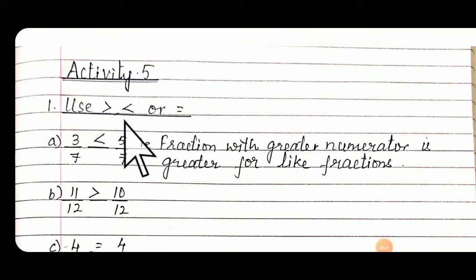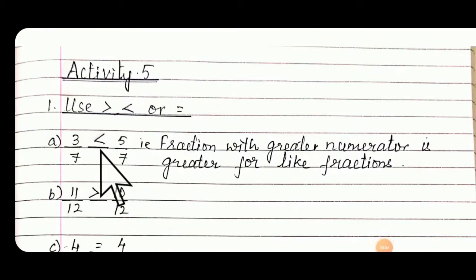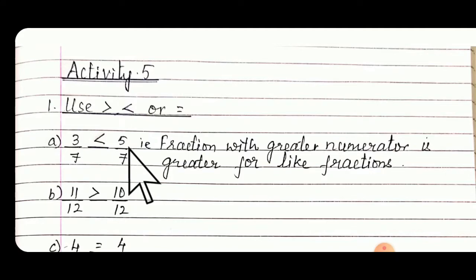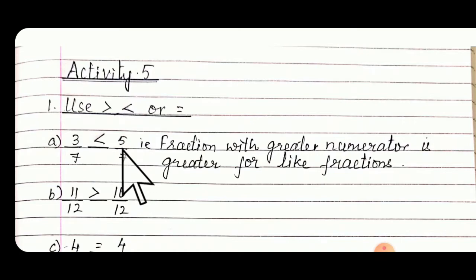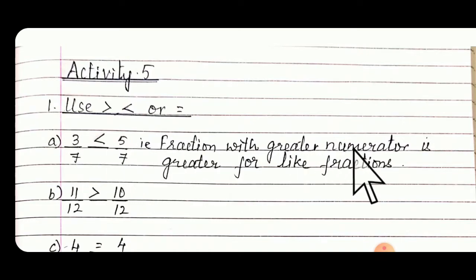Activity 5: Use comparison symbols. For 3/7 vs 5/7, the numerators are different and denominators are the same. See 3 and 5 — which is the bigger one? 5. For like fractions, the fraction with the greater numerator is greater.